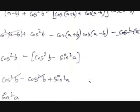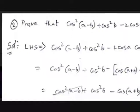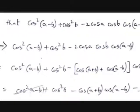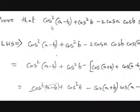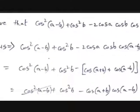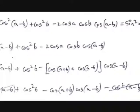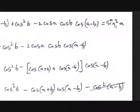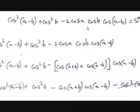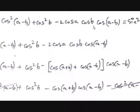Now let's see examples on these. Our first example: prove that cos²(A−B) + cos²B − 2 cos A cos B cos(A−B) = sin²A.